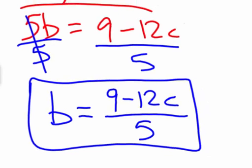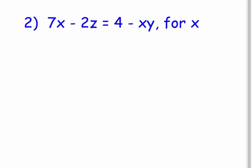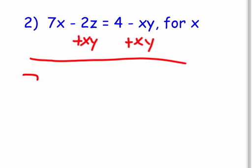For number 2: 7x - 2z = 4 - xy, and we're going to solve for x. Notice x appears on both sides of the equal sign. We're going to touch on something a little more advanced — essentially the opposite of the distributive property, which is factoring. First, let's get the x terms on the same side. I'll add xy to the left side so I have 7x - 2z + xy = 4.